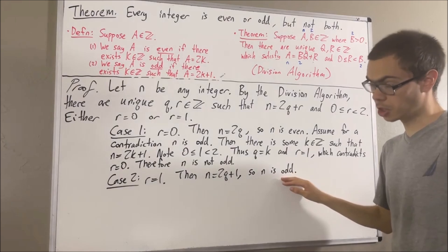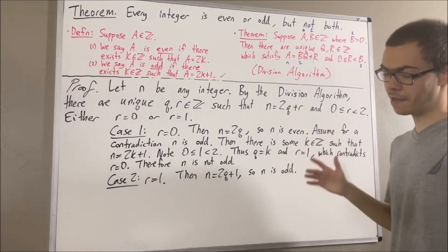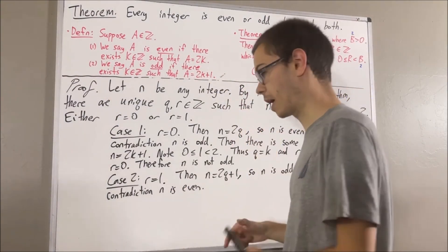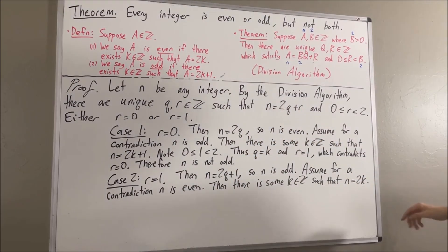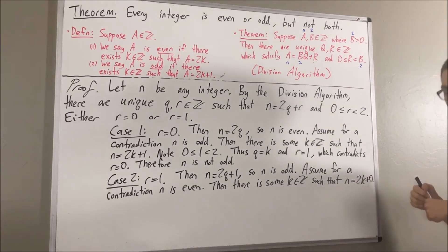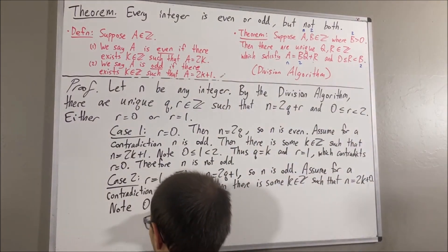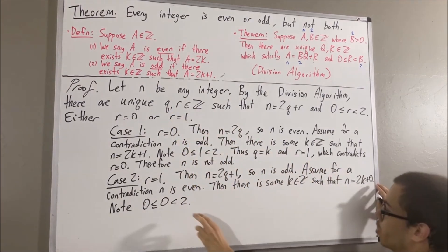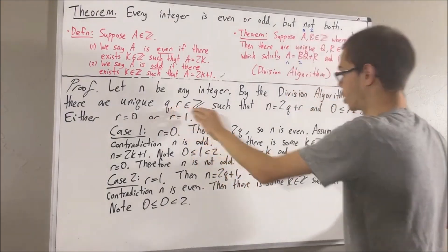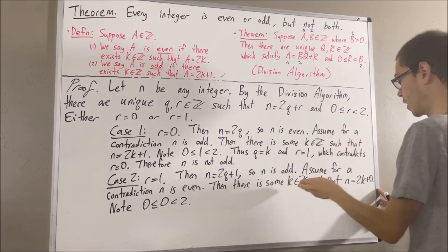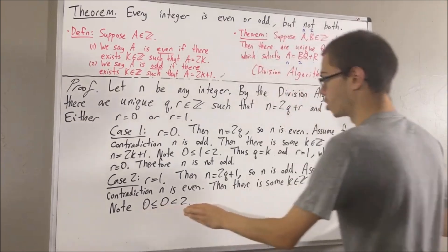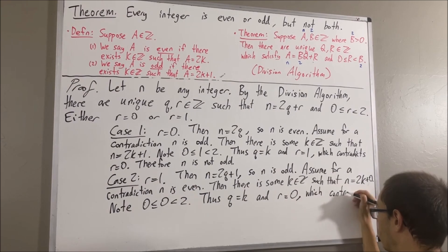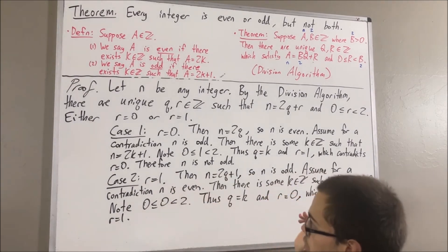We've shown that n is odd, so all that's left to show is that n is not even. Assume for a contradiction that n is even. Then by our definition, there is some integer k such that n is equal to 2k, which we rewrite as 2k plus 0. Note that 0 is less than or equal to 0 is less than 2. These two facts tell us q must equal k and r must equal 0, because q and r are the only integers making those statements true — and k and 0 do make them true. So q must equal k and r must equal 0. But this contradicts the fact that r is equal to 1. Our assumption that n is even led us to a contradiction, so we must instead have that n is not even.